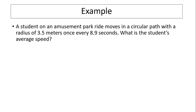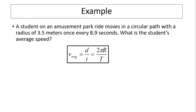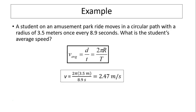Let's take a look at this example. A student on an amusement park ride moves in a circular path with a radius of 3.5 meters once every 8.9 seconds. What is the student's average speed? The student's average speed equals 2πr over T. We know r and T, so substituting the numbers into the equation, you should get 2.47 meters per second.